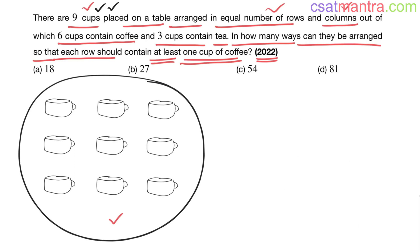Now out of this total number of arrangements, we need to subtract arrangements which has no cup of coffee in a row. That means, let's say in this arrangement we have all teas in a row. This is one arrangement we need to subtract.